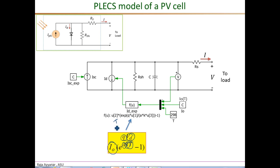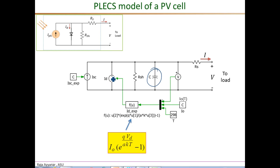So I_O is the dark saturation current, U1 is the measured diode voltage Vd, and U3 is the temperature. Regarding the capacitance C — this capacitance is needed to prevent the algebraic loop that would otherwise be formed, since the diode current depends on the diode voltage, and the diode voltage in turn depends on the diode current and how much is being diverted from the current source. To prevent that loop, we place this capacitance, and C can be a really low value in the order of several picofarads.